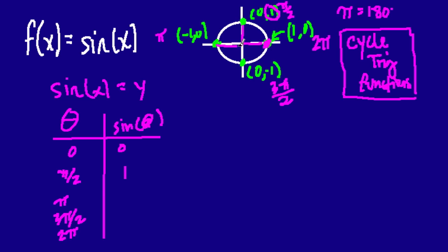The sine of π, which is over here, is the y value here. It's back to 0. And then the sine of 3π over 2, well what's that? It's down here, negative 1. And then back to the sine of 2π, which is 0.